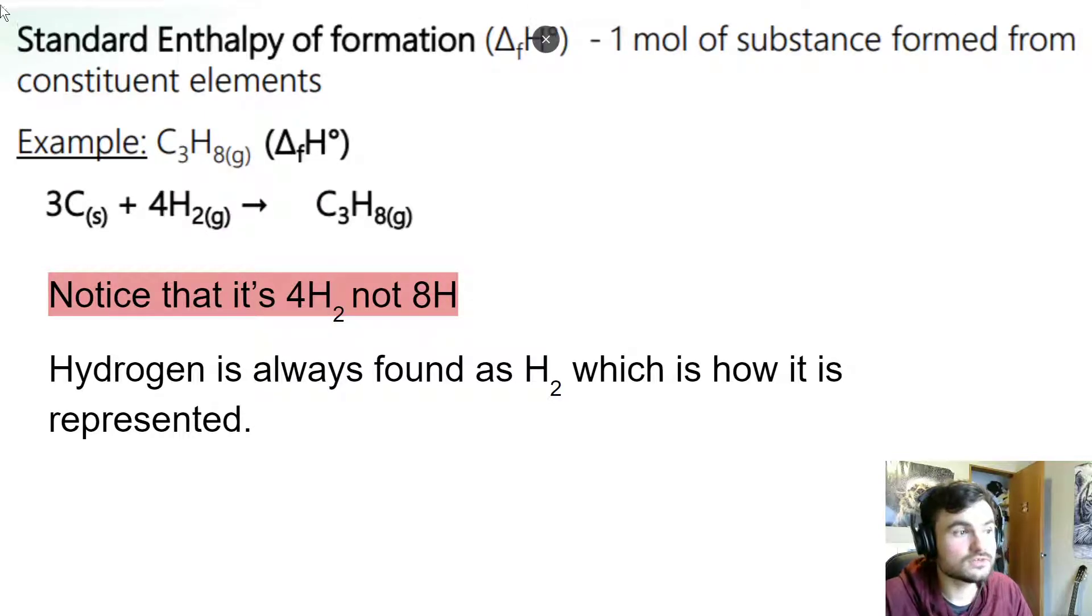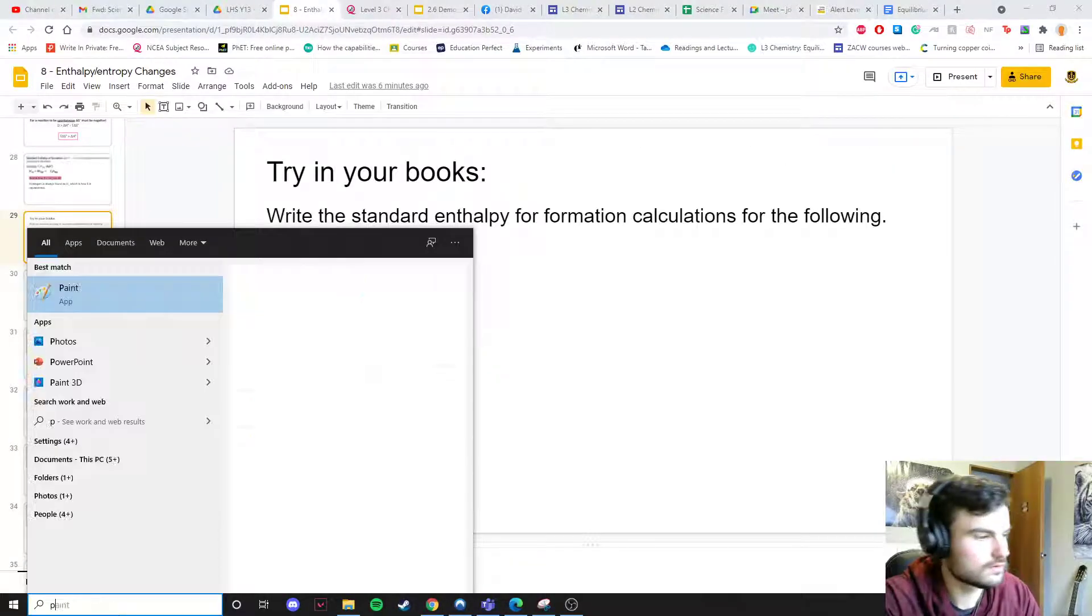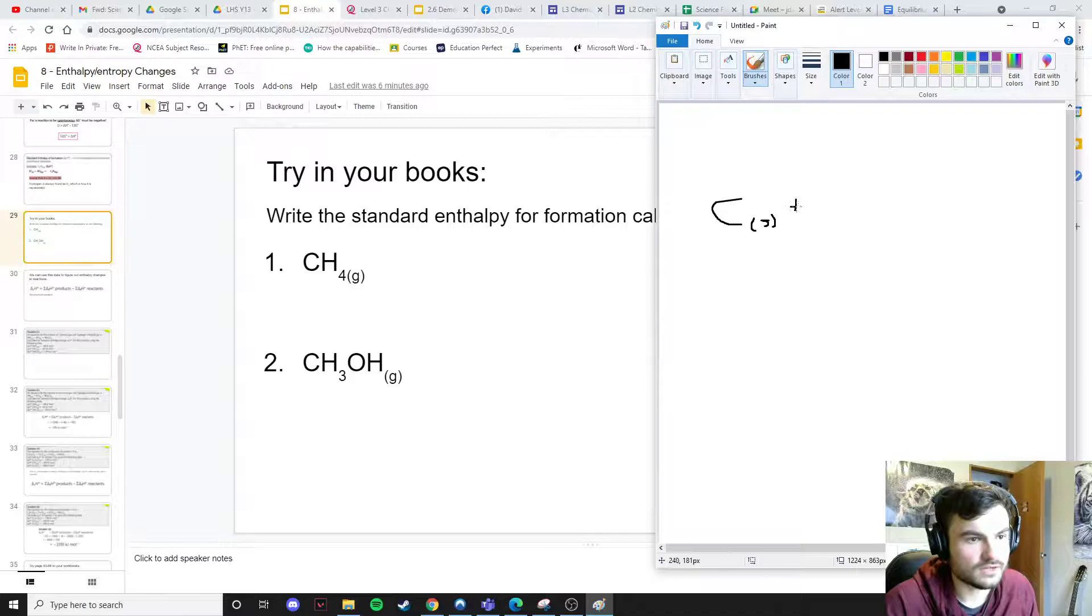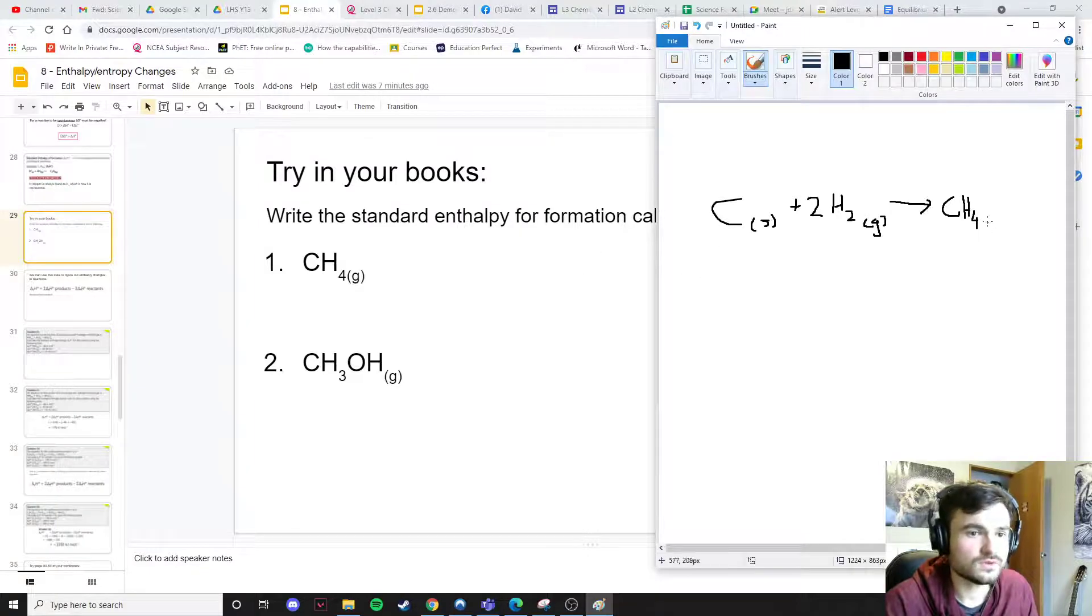Copy down these notes into your books including the example. We're going to try these ones in our Google classroom post. For CH4 methane, we have carbon solid plus some hydrogen gas, two lots of hydrogen gas. G for gas is going to make our methane CH4. That's the first one and this is a gas.